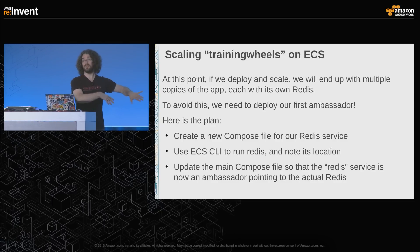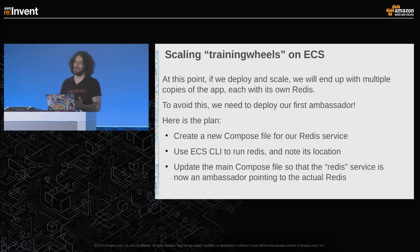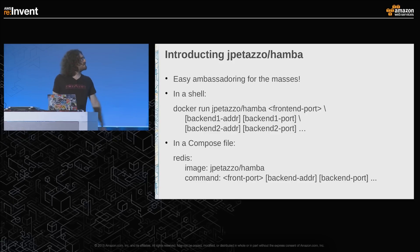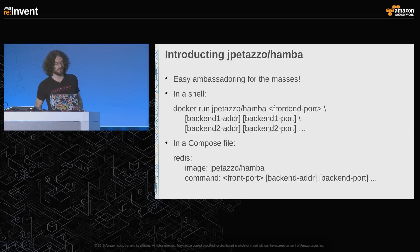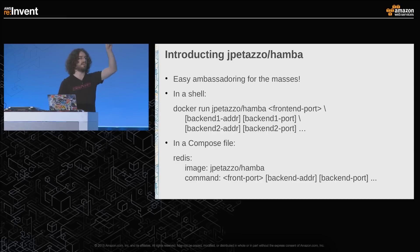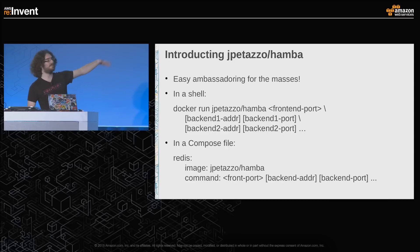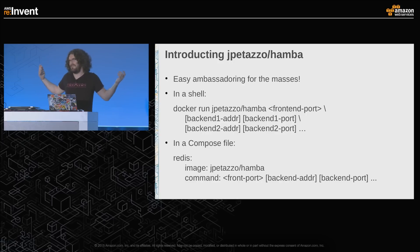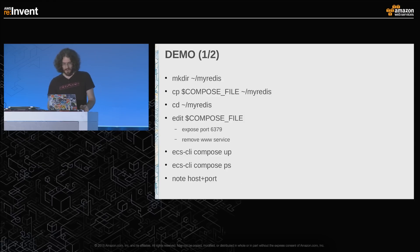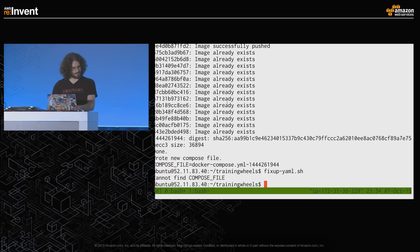For the ambassador, I'll use jptazzo/ambassador — a little Swiss Army knife of load balancing. You give it the port to listen on and a list of backends. If there's only one backend it just routes traffic; if there are multiple, it does load balancing. It's about 50 lines of shell script. First, the job is to deploy Redis: I create a directory, write a Compose file with just the Redis service with its port exported, and do ECS CLI compose up. Then I do ECS CLI compose PS and copy the host and port.